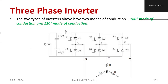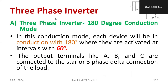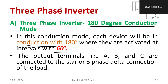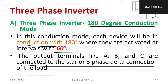Now let me explain the operation. We have two modes of conduction. Let me talk about 180-degree conduction first. The conduction angle is 180 degrees, and each segment is activated at an interval of 60 degrees — 60 degrees times 3 equals 180 degrees. The output terminals A, B, C are connected to the star or three-phase delta connection to the load. A is connected to R, B to Y, and C to B (R, Y, B).